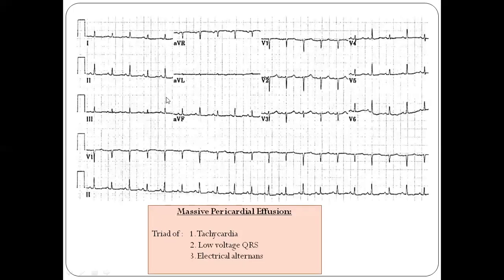Here you can see an example ECG showing low voltages. As stated, the QRS should be less than 5mm in limb leads — one large square equals five millimeters of height. You can see the QRS complex is only about three to four small squares, meaning three to four millimeters in the limb leads, confirming low voltage. In the chest leads, it should normally be more than 10mm, but here the R wave to S measures approximately eight millimeters — again confirming low voltage ECG.